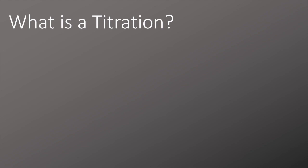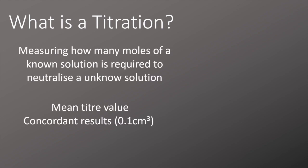So first of all, what is a titration? A titration measures how many moles of a solution of a known concentration is required to neutralize a solution of an unknown concentration. We repeat this process until we have about three concordant results, and these are results which are within 0.1 centimetres cubed of each other.